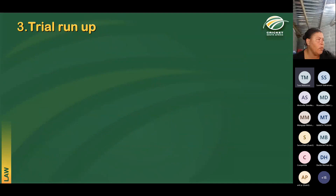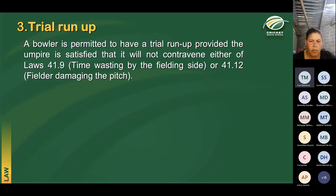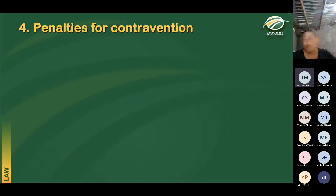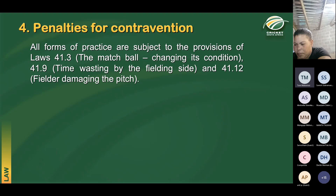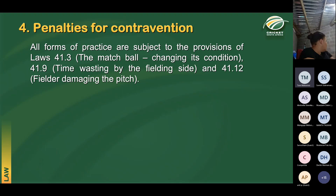Are bowlers allowed a trial run-up? Yes they are. A bowler is permitted to have a trial run-up provided there is no time wasting and he or she does not damage the pitch. Now, having seen what the law allows and disallows in terms of practice, what happens if a fielding side is guilty of illegal practice? The law has certain penalties: all forms of practice are subject to Laws 41.3, 41.9, and 41.12 — they should not change the condition of the ball unfairly, waste time, or damage the pitch.